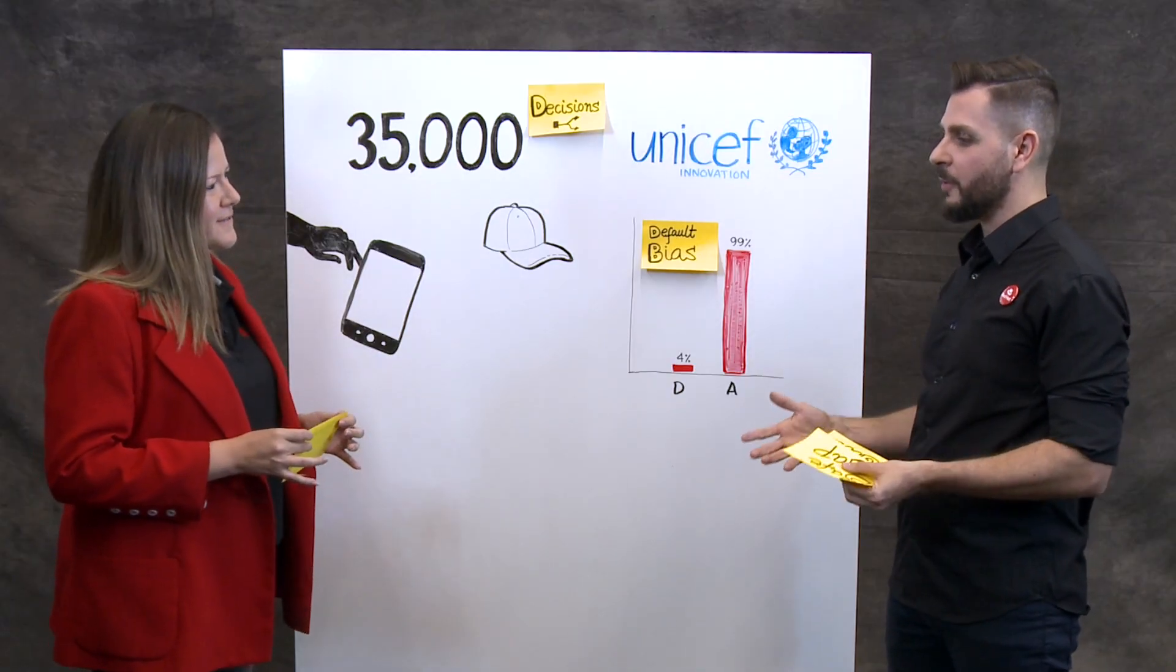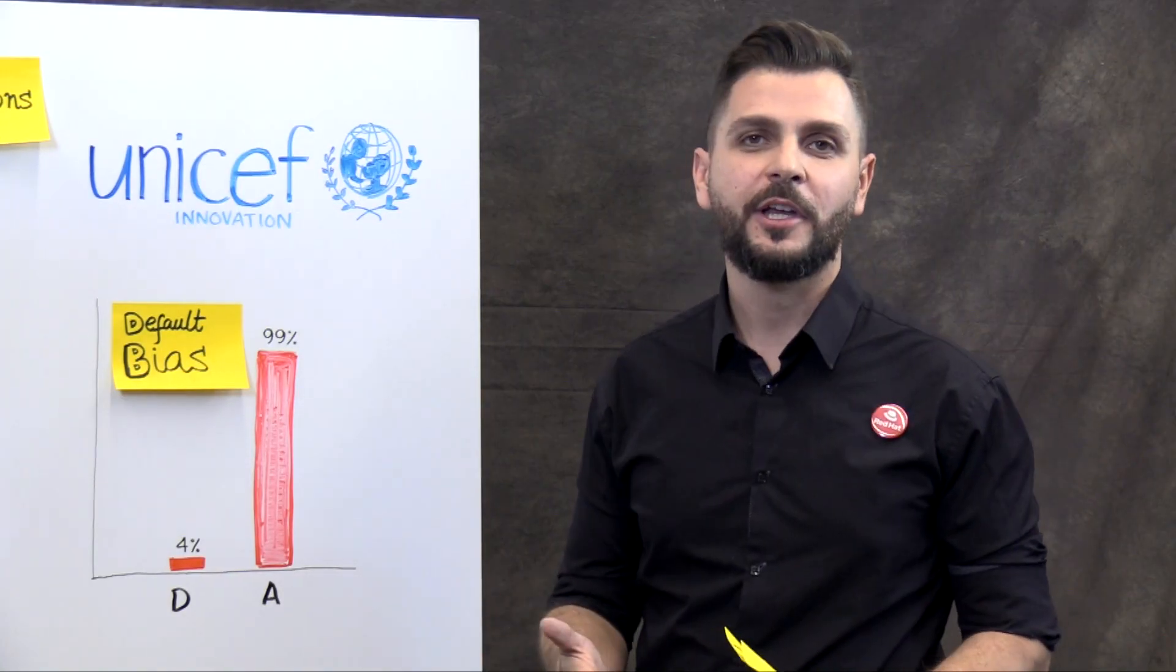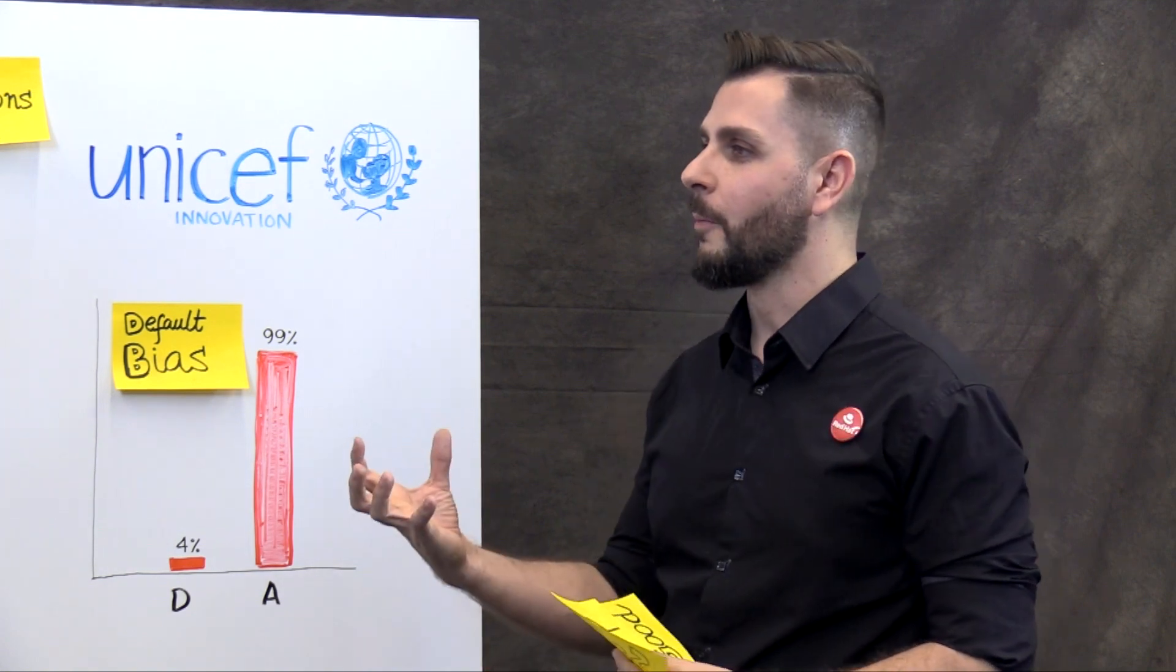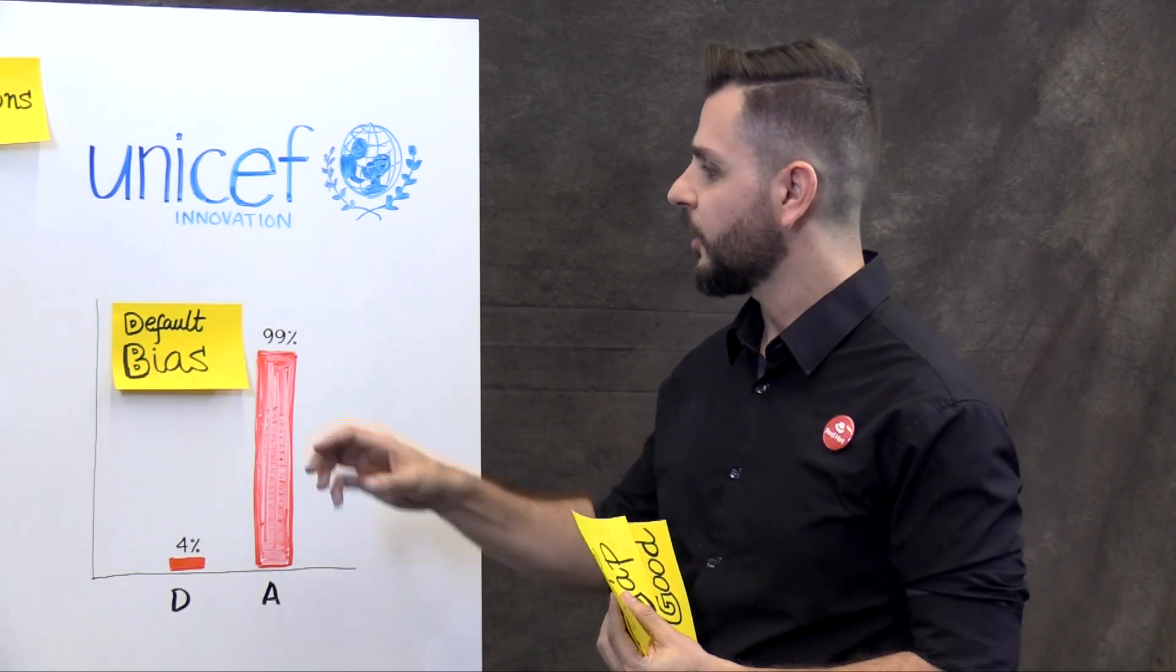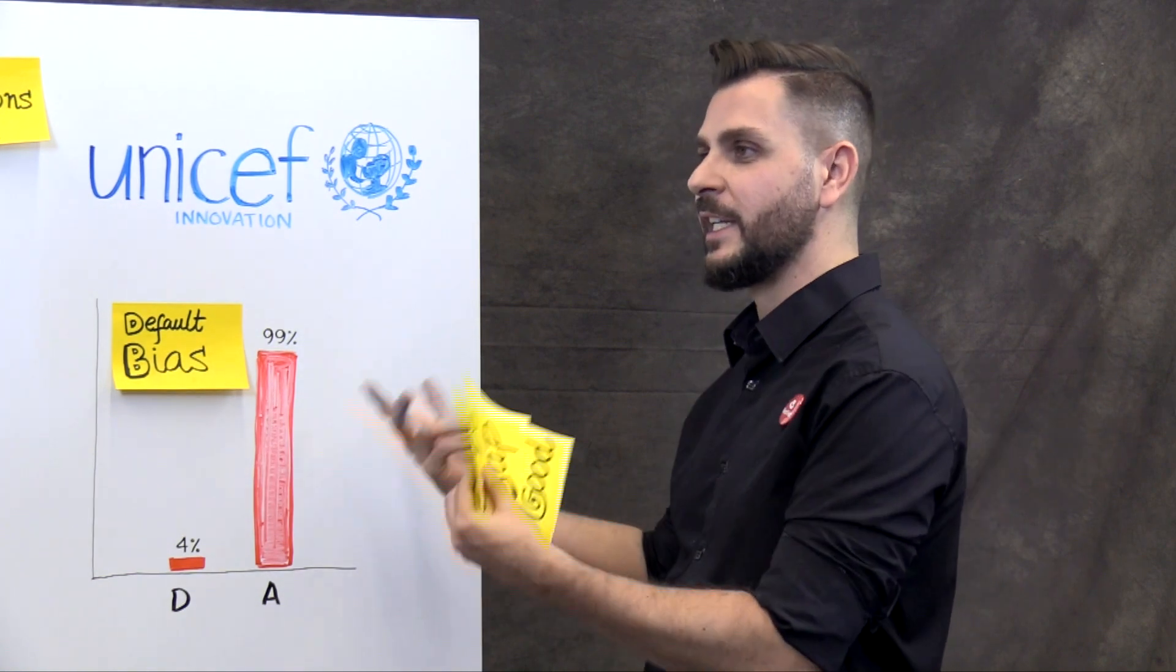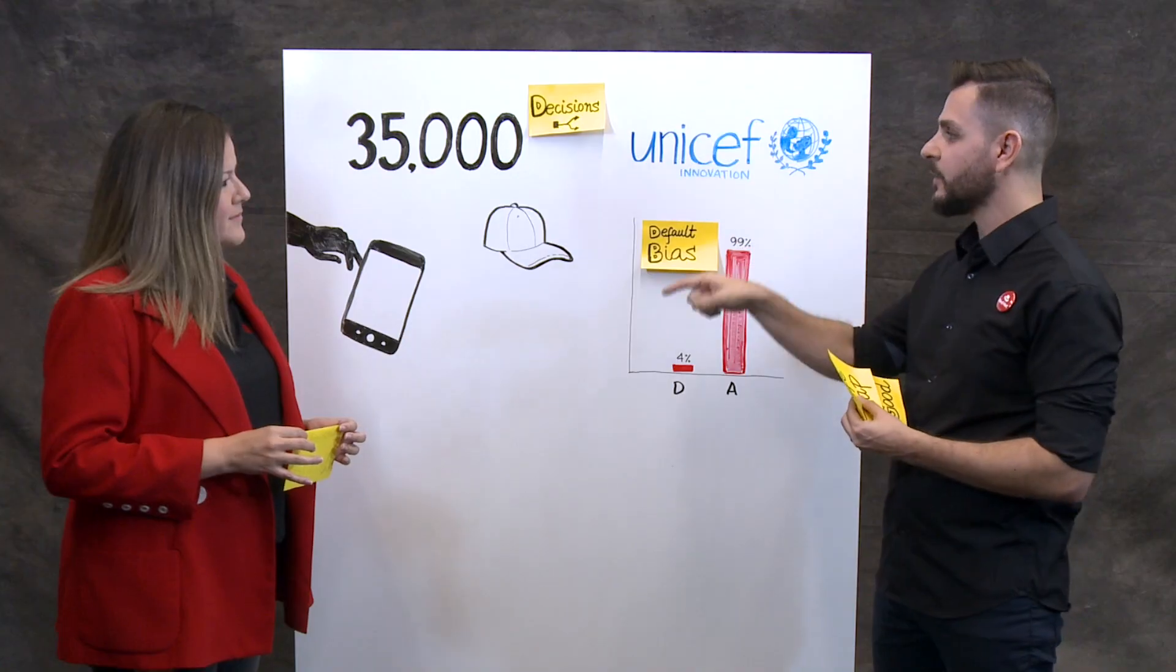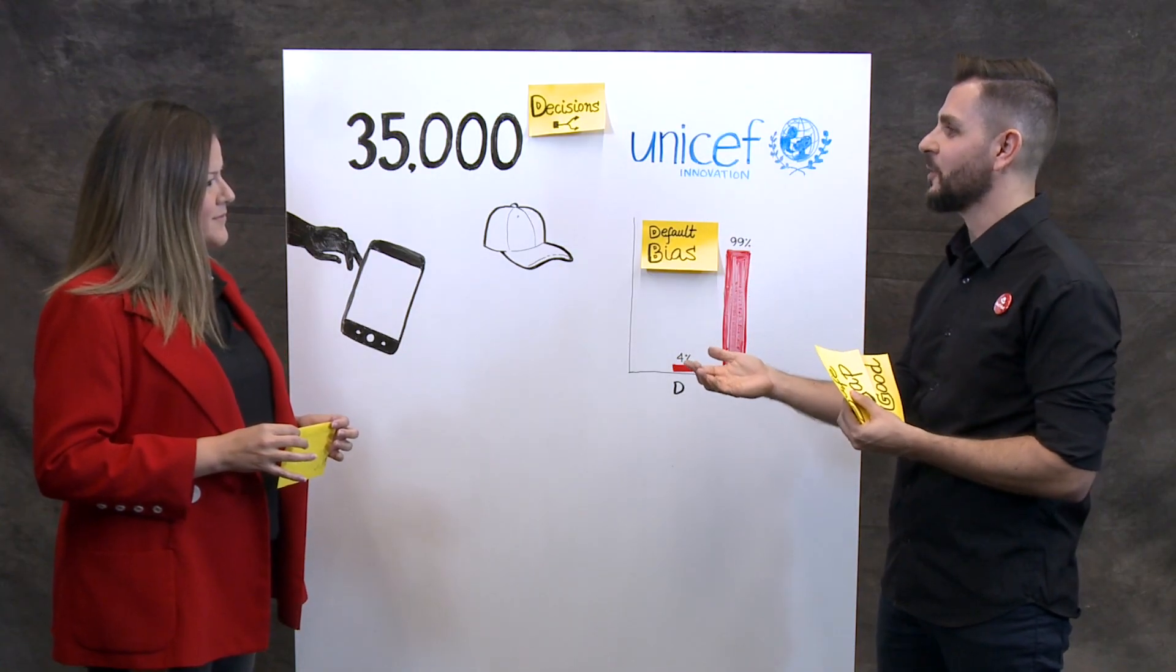So that book is very much inspired by another book called Nudge from Richard Taylor and Kasselstein. So Richard Taylor got the Nobel Prize in 2017 for combining psychology and economics on the book called Nudge. So the default is actually a nudge. So by putting the default as people being organ donors by default, you actually influence people to make that decision.